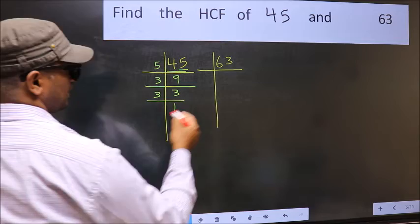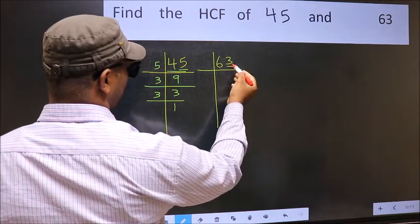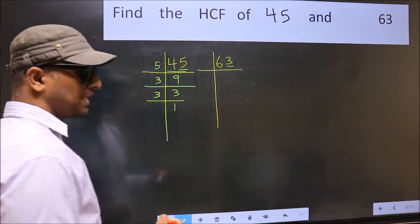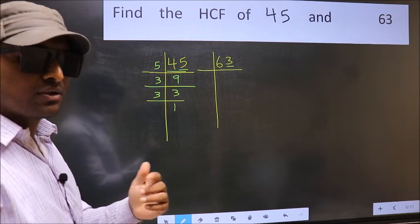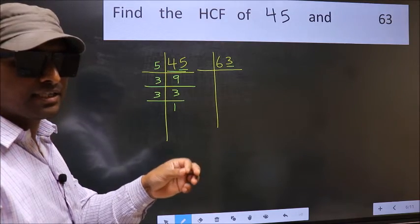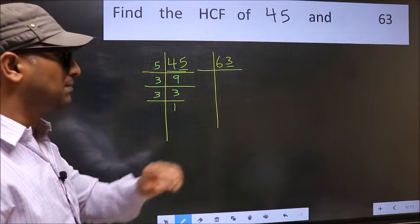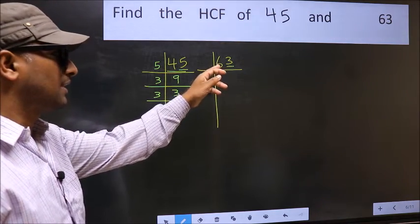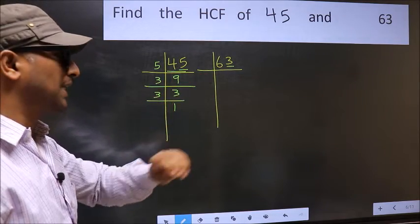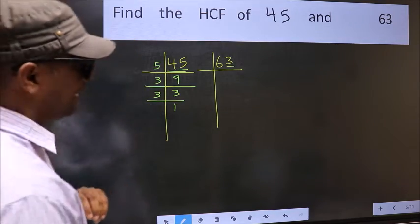Now the other number. Last digit 3, not even, so not divisible by 2. Next prime number, 3. To check divisibility by 3, we should add the digits. What I mean is 6 plus 3, we get 9 and 9 is divisible by 3. So this number is also divisible by 3.